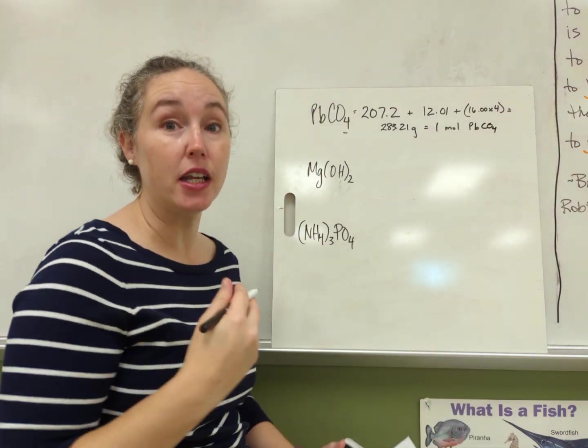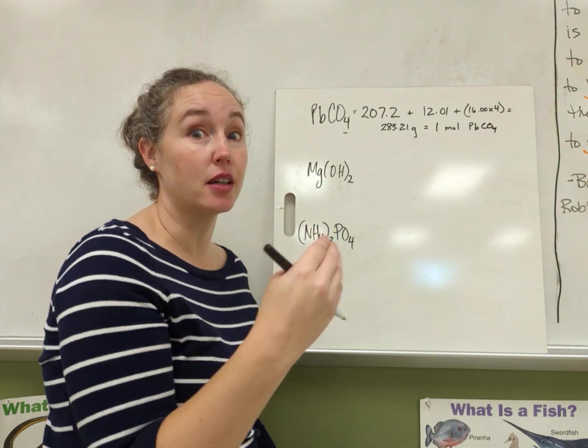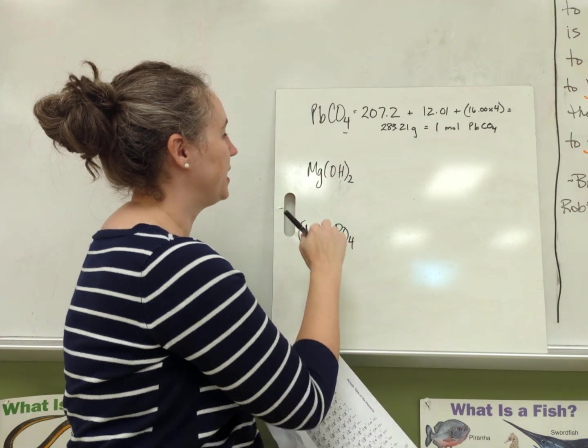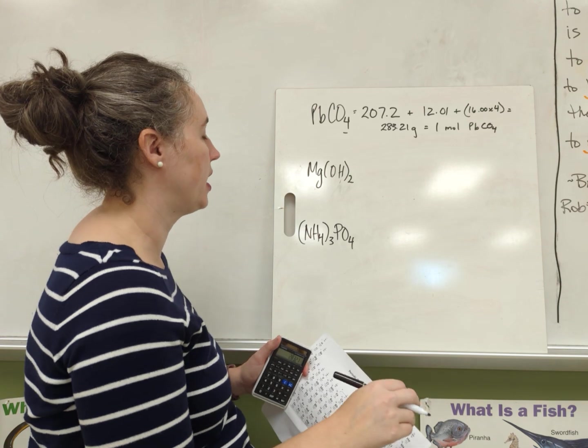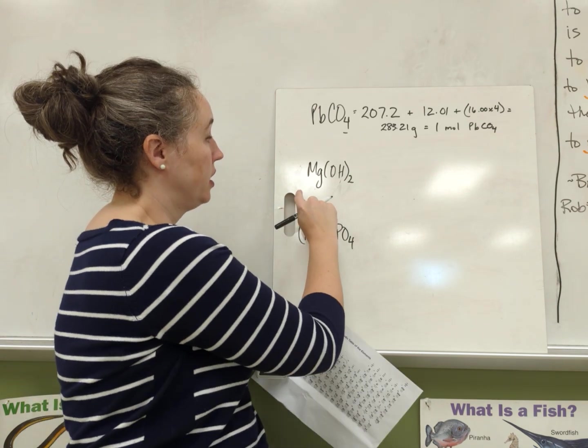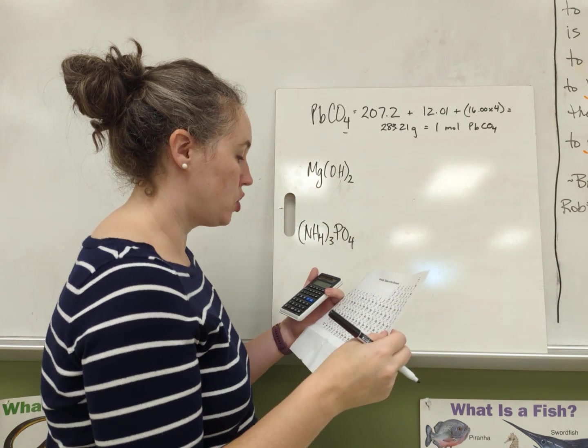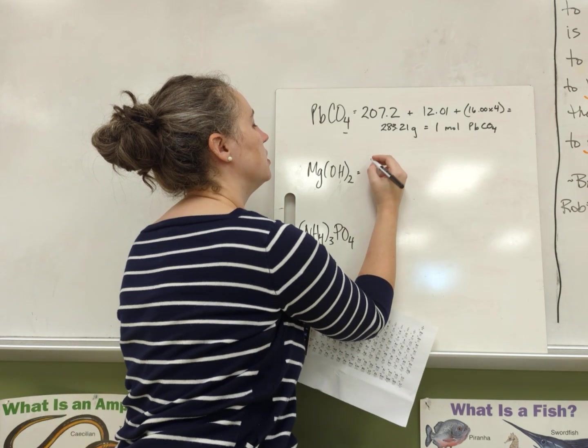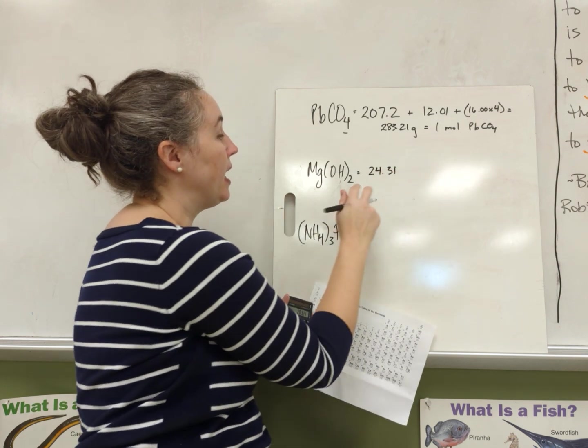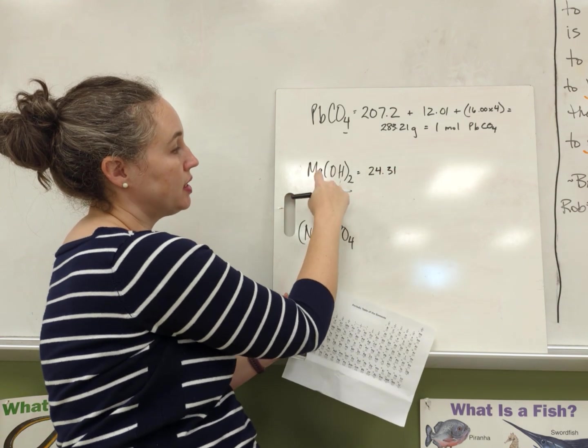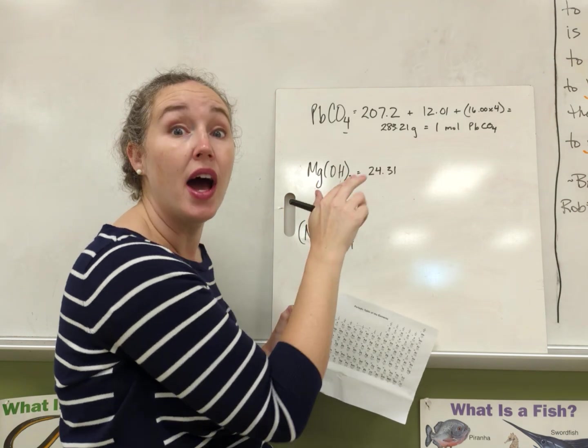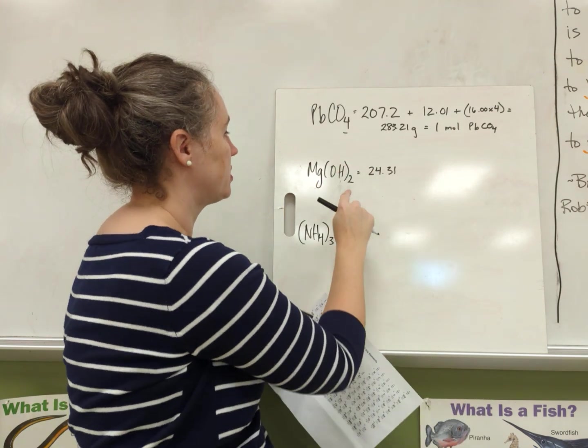Now let's try magnesium hydroxide. This one, we have magnesium, which is Mg 24.31. Now OH is in parentheses with a 2, which means we're going to have 2 of everything inside the parentheses.